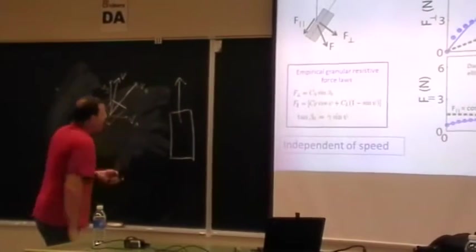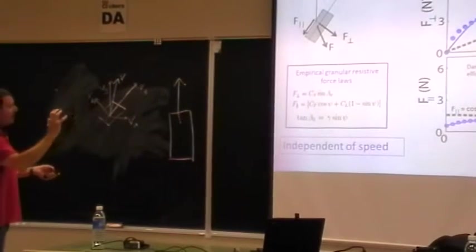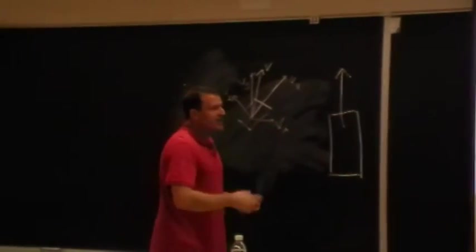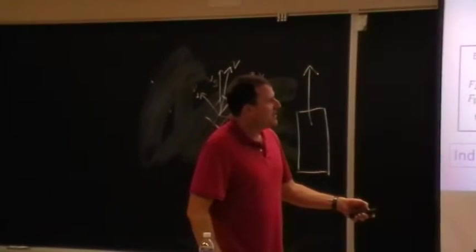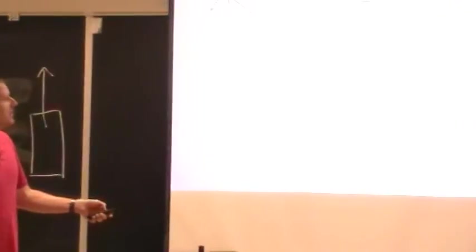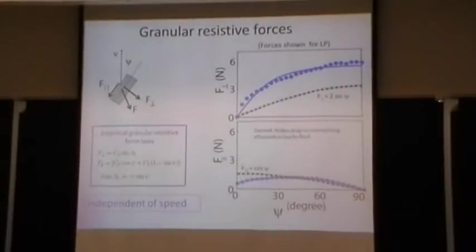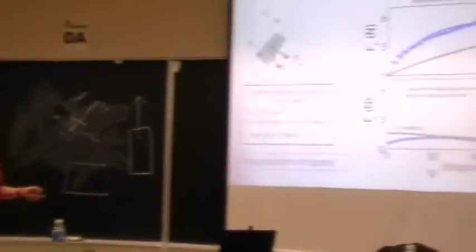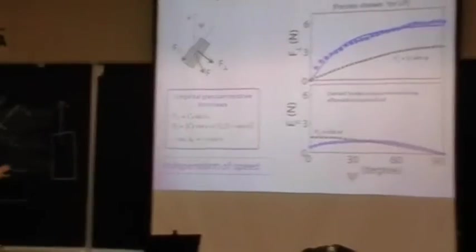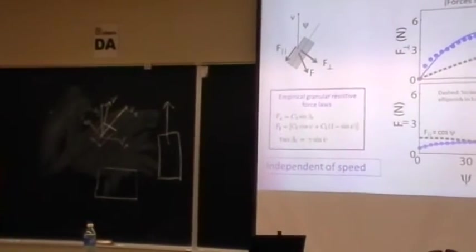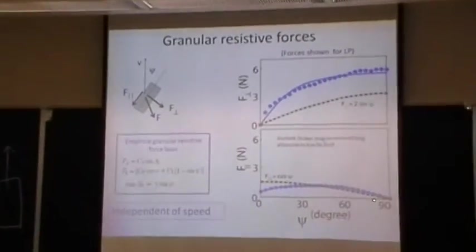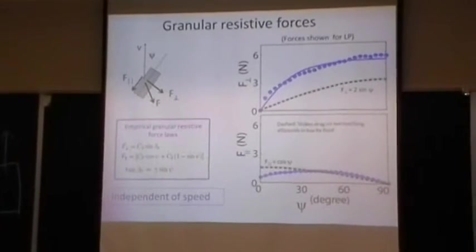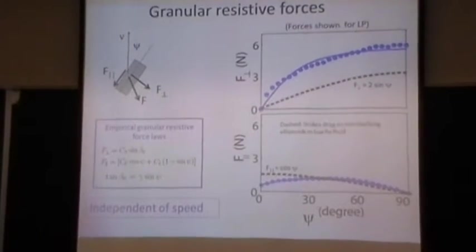The parallel force follows roughly a cosine, while the granular case actually peaks between about 30 and 60 degrees — unlike the Stokes case which just increases monotonically. The intuitive explanation: when the rod is oriented perpendicular to motion, material flows symmetrically to either side, and the parallel force components cancel to zero, giving a peak. We don't fully understand this yet, but those are the empirically measured force laws that we now plug into our resistive force theory framework for granular sand swimming.